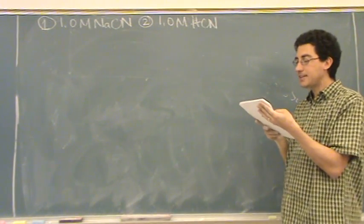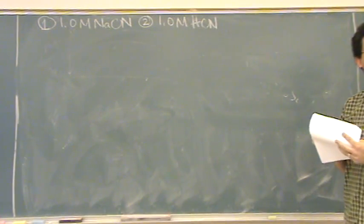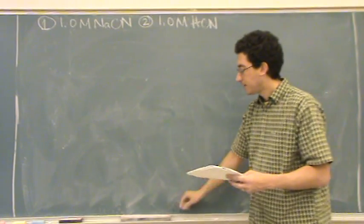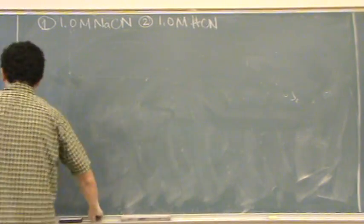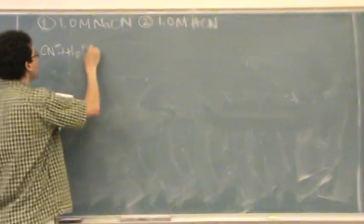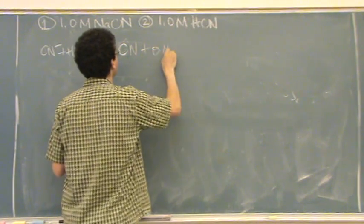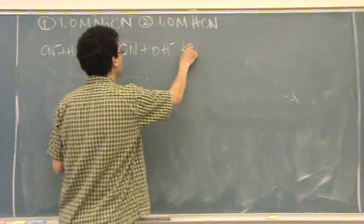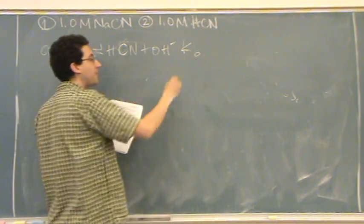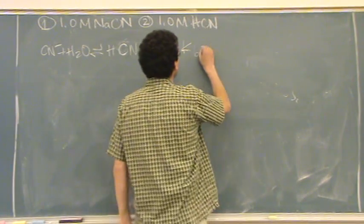Part B: find the pOH of beaker number one. How would we do that? ICE table. So just the bare bones basic of that — CN⁻ plus H₂O. You write the reaction out. Now, this is a Kb. How would you find that? KW over Ka from the table — Kb is not in the table, only Ka is listed.